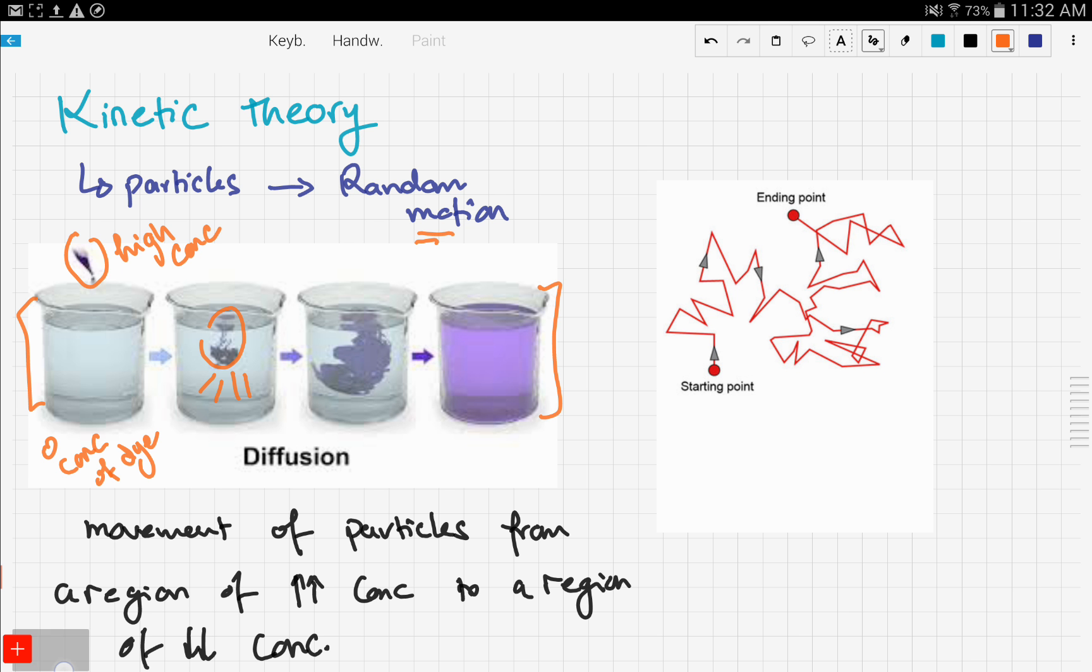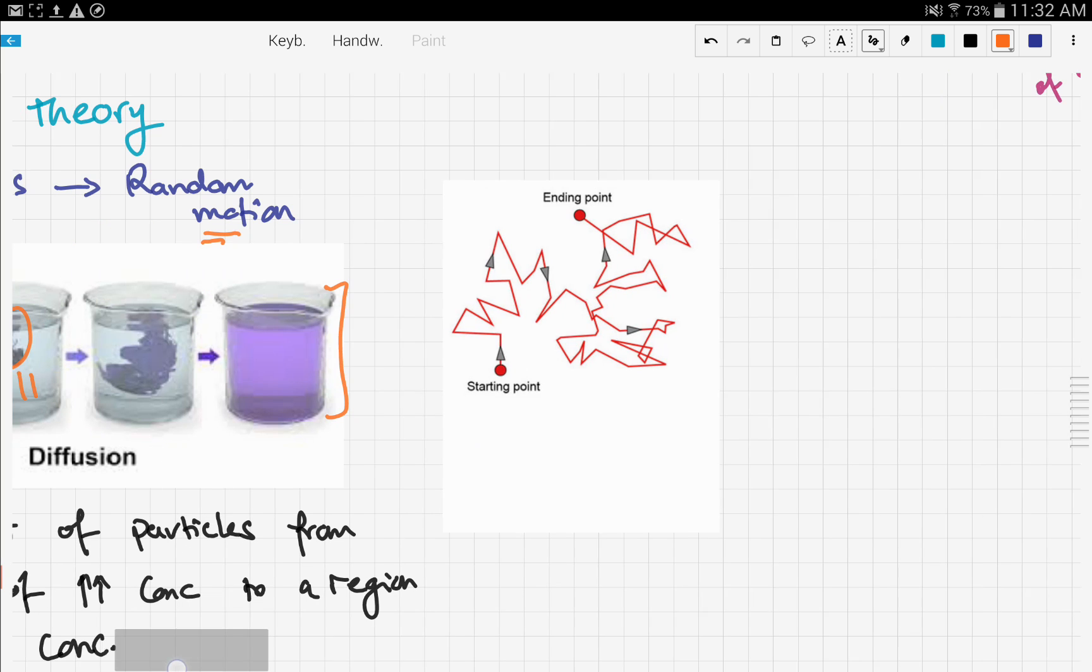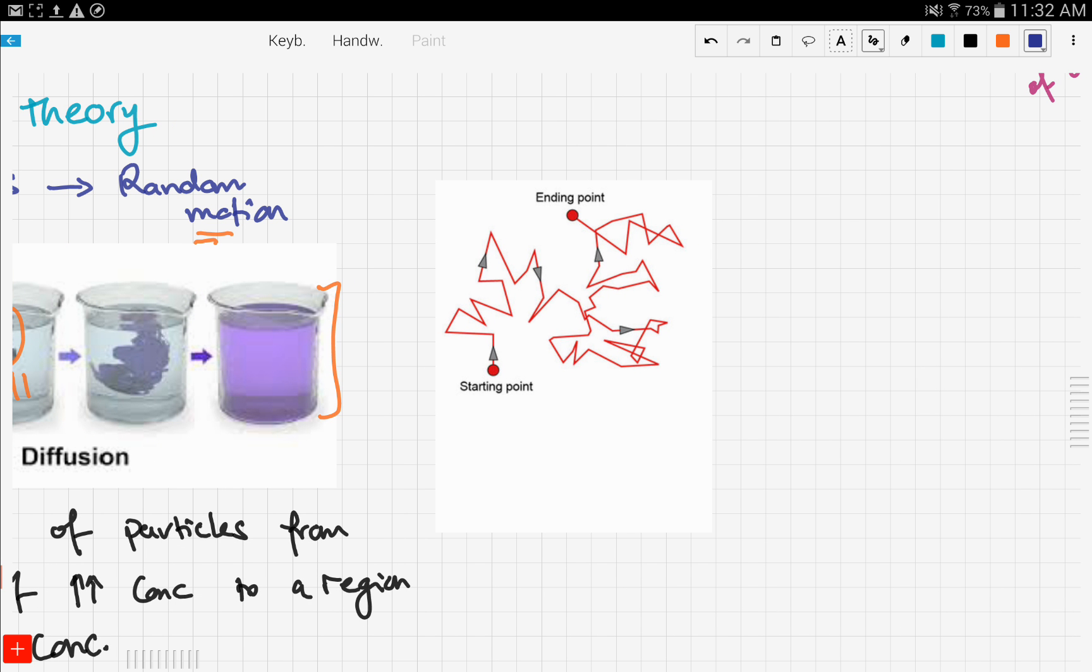Now let's move on to the Brownian theory of motion. The Brownian motion theory was first discovered in the 19th century by a famous scientist.